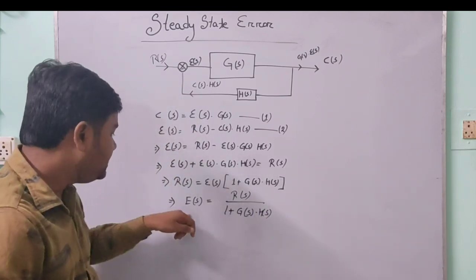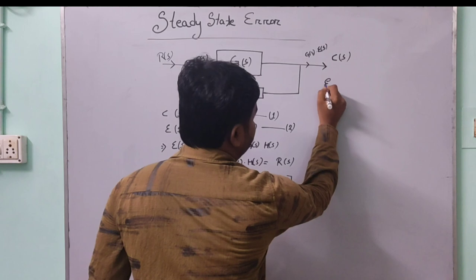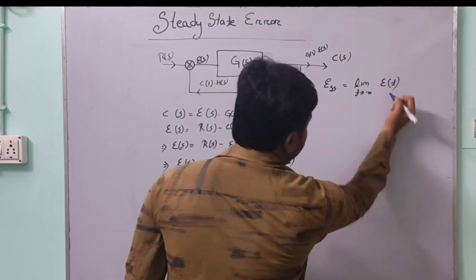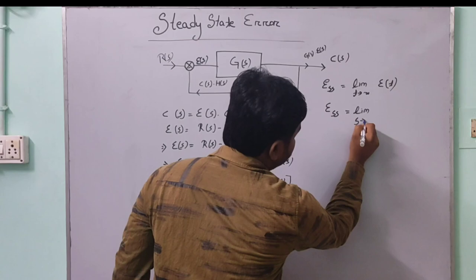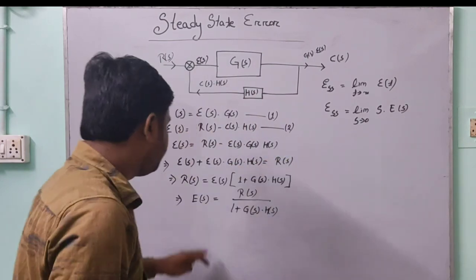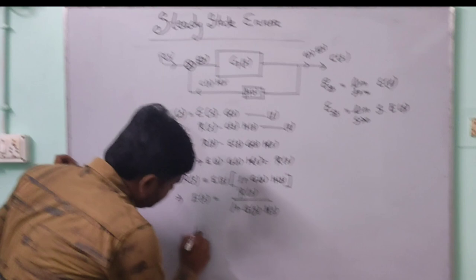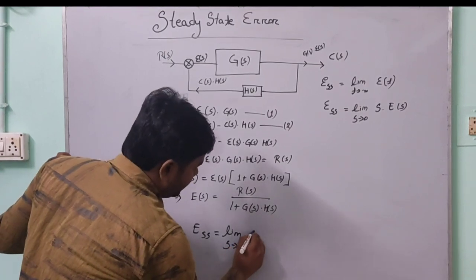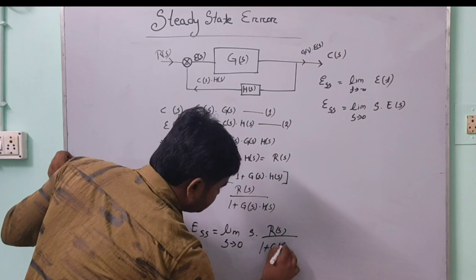Now, E(S) is the error in terms of frequency. We have studied that the formula for steady state error is E_SS equals limit t tends to infinity of e(t) in the time domain. In the frequency domain, E_SS equals limit s tends to 0 of s into E(S). By substituting the value of E(S), we get: E_SS equals limit s tends to 0 of s into R(S) divided by (1 plus G(S) into H(S)). This is the main formula to find the steady state error.